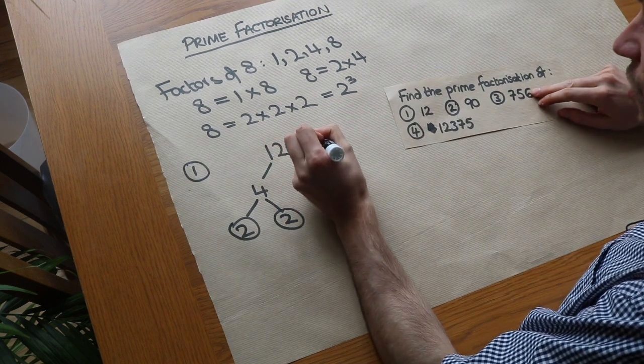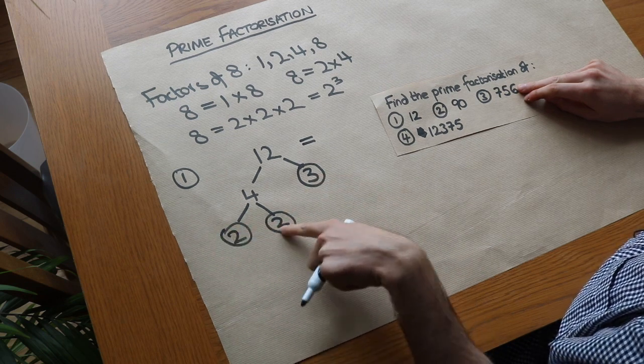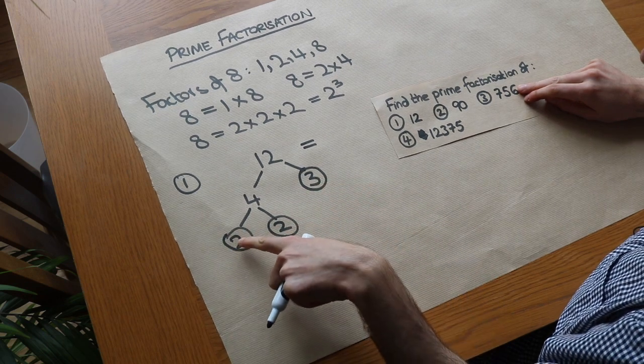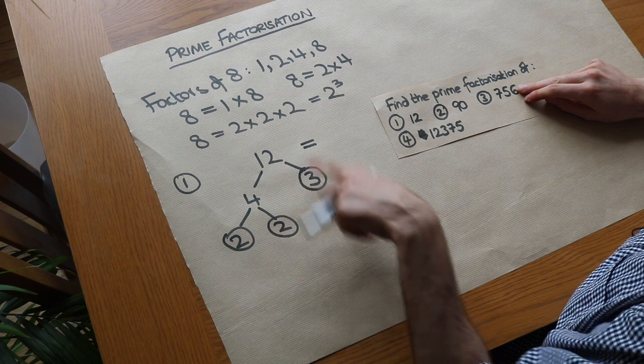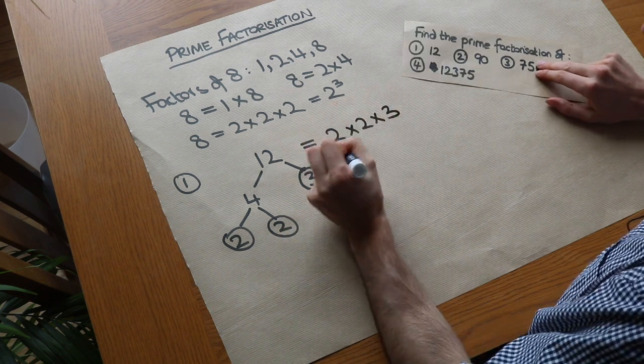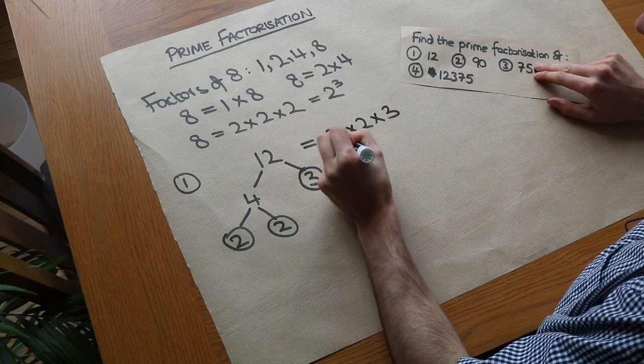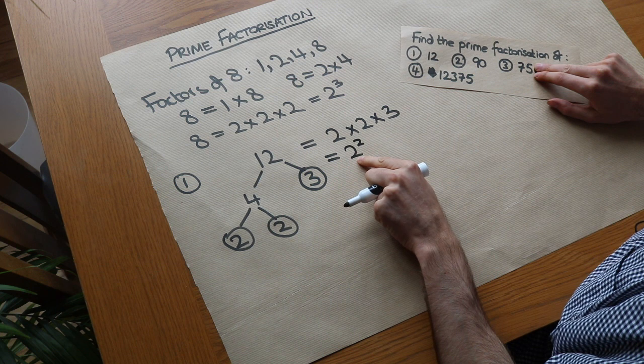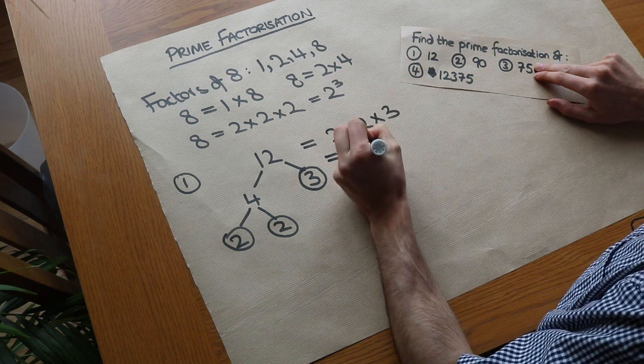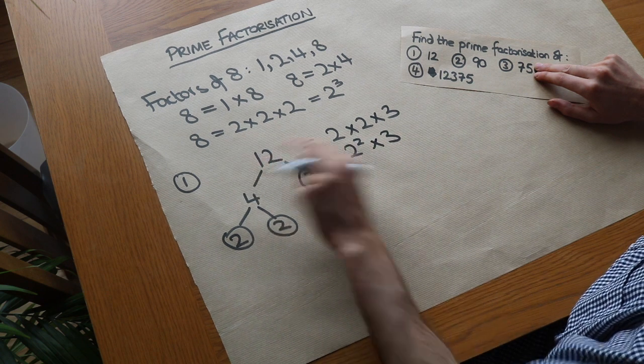And that means we can write 12 as the product of its leaves, these circled numbers at the bottom. So you could write 12 as 2 times 2 times 3. And we could write that more concisely as well. We know that 2 times 2 could be written as 2 squared, because 2 squared means 2 times 2, times by the 3. And there we go. That is the prime factorisation of 12.